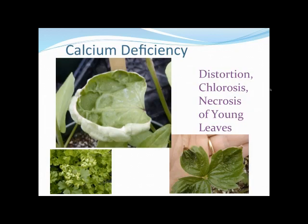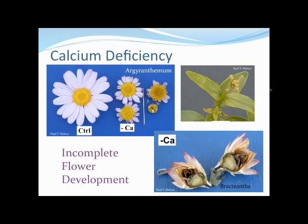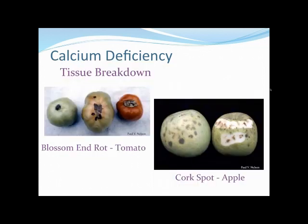Let's look at calcium first. You see this leaf distortion — it almost looks like there's a drawstring at the base of the leaf that somebody pulled, curling the margins up and into each other. As it progresses, we'll often see necrosis at the tip. We also see incomplete flower formation. This is essentially the same as what we see with blossom end rot in tomato production — the flower end rots because there's not enough calcium to support cell structure. Cork spot in apple is also a classic calcium deficiency symptom.